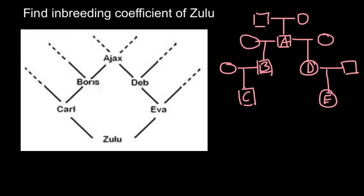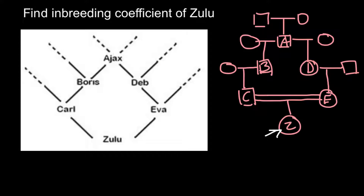Both Carl and Eva contributed their genetic makeup to the child Zulu, which means we have consanguineous mating between two close relatives. Now we have to find the inbreeding coefficient of Zulu. This is going to be our problem for which we are doing our calculations. The line diagram would actually be easier to use, because it has only the important information needed for our calculations. In this pedigree we can also cross out all the people who are not going to be part of our calculations.